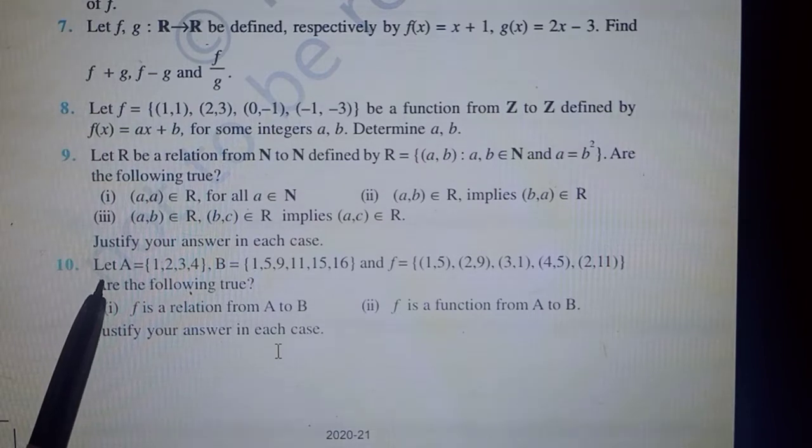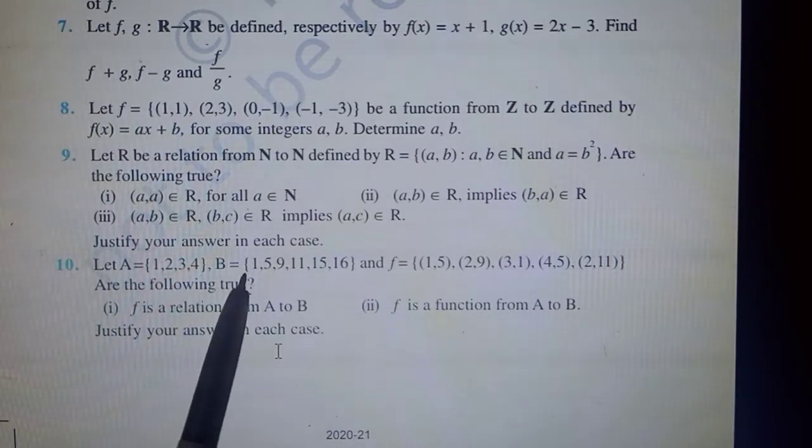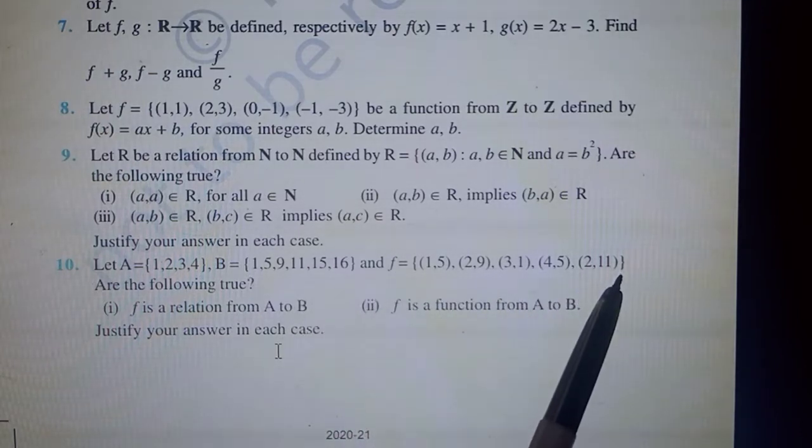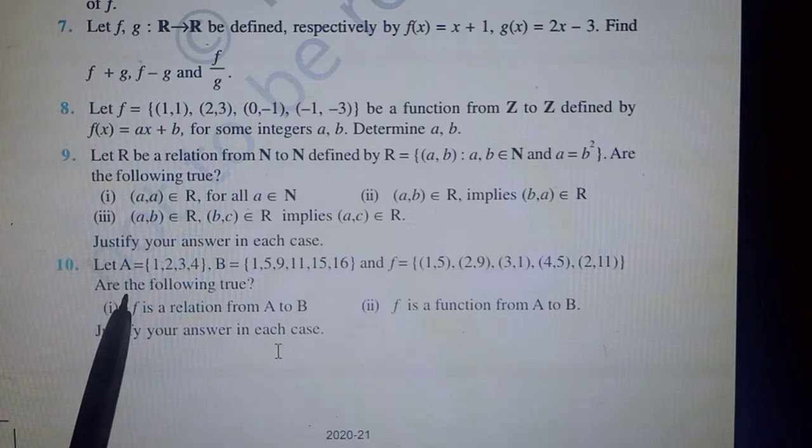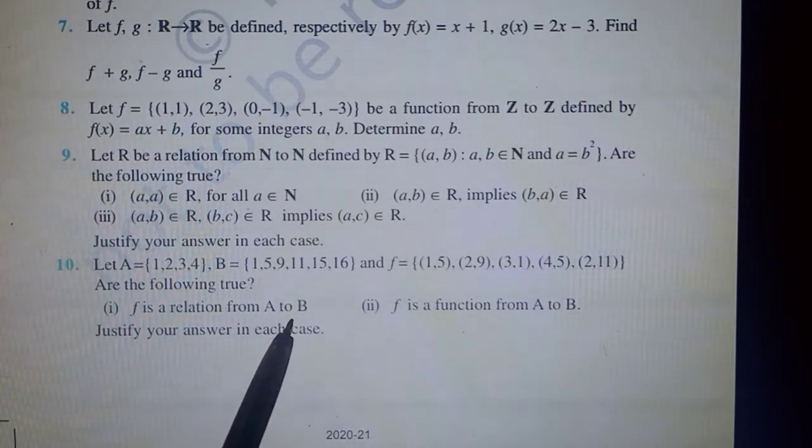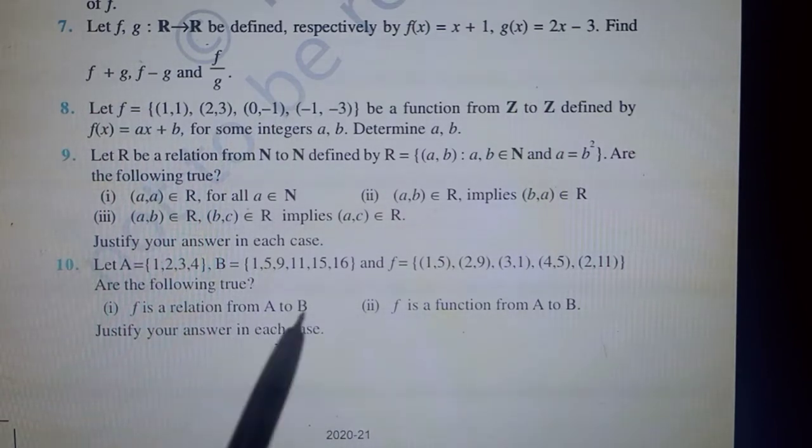The tenth question: set A is given as {1,2,3,4}, B has all these entries, and in ordered pair form we have been given a relation f. You have to tell whether f is a relation from A to B, whether f is a function from A to B, and justify your answer.